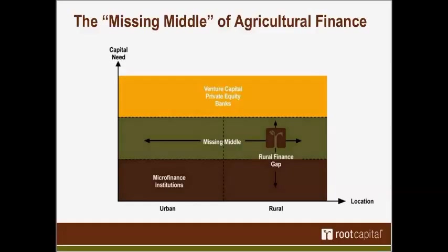The Initiative for Smallholder Finance estimates that the unmet need for finance by smallholders in Sub-Saharan Africa, Latin America, and South and Southeast Asia — excluding China — is $280 billion. That's the problem we are trying to solve. In addition to our direct lending, which as Root Capital really only reaches less than 0.1% of global demand, we're committed to working with others to catalyze a global market for smallholder finance.